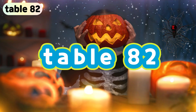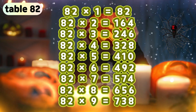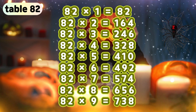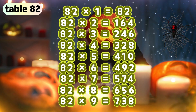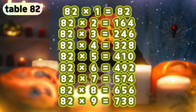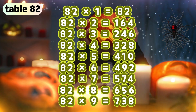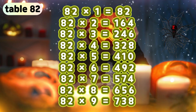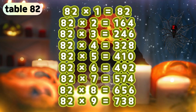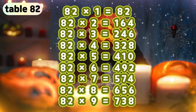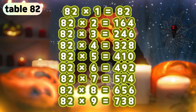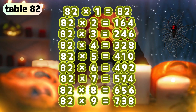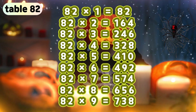Table 82. 82 times 1 is 82. 82 times 2 is 164. 82 times 3 is 246. 82 times 4 is 328. 82 times 5 is 410. 82 times 6 is 492. 82 times 7 is 574. 82 times 8 is 656. 82 times 9 is 738.